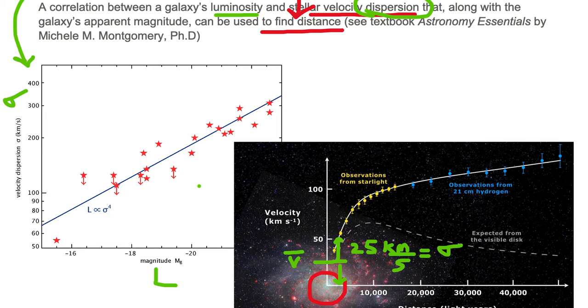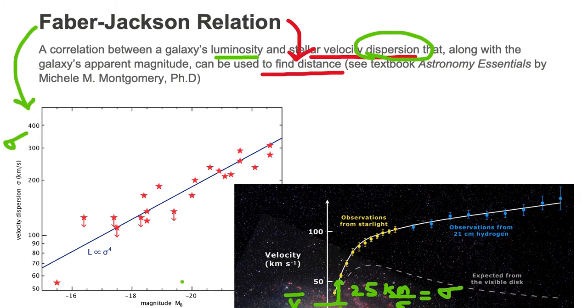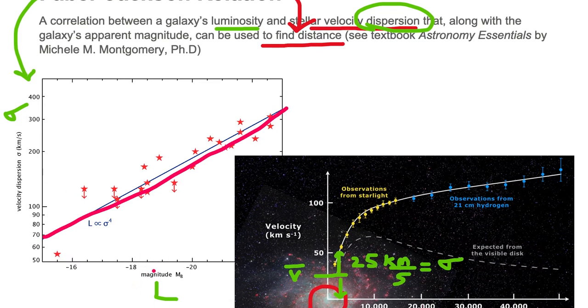Now, the Faber-Jackson relation here on the left is not for spiral galaxies, but for elliptical galaxies. Here we see various different data points, which are red colored stars. Each red colored star represents an elliptical galaxy. And what Faber-Jackson had determined is the dispersion speed and the luminosity for each elliptical galaxy, and they plotted it on this diagram of dispersion versus luminosity. And they found that there is a relation or a correlation that exists between velocity dispersion and luminosity.